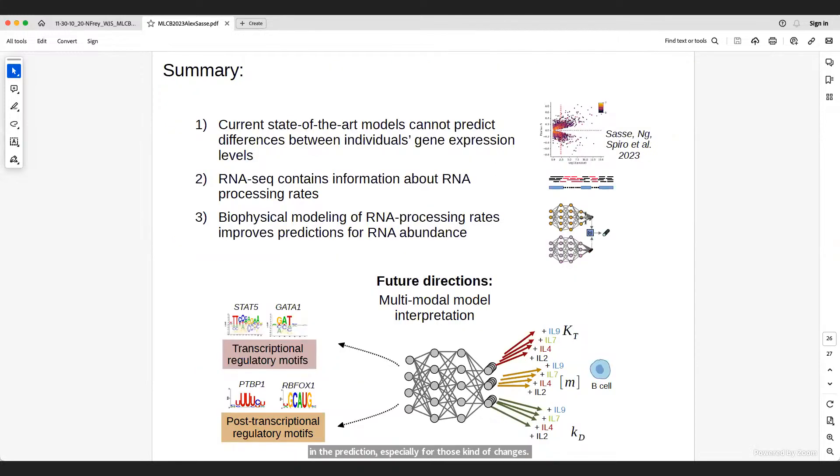And so, in summary, I hope I've shown you that current state-of-the-art models cannot predict difference between individuals' gene expression levels, show you a way of how we can use RNA-seq data to get information about RNA processing rates, and then how we can use this all together in a combined biophysical model to make better predictions for gene expression. And in the future, I think it's very exciting because this model has also the ability now, we can split basically the model into transcriptional and post-transcriptional parts, and therefore also make better analyses of what influences post-transcriptionally and transcriptionally expression, but not only that, but also the processing rates directly.